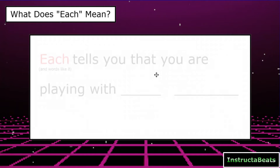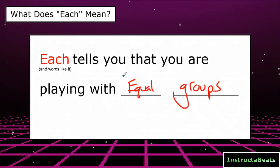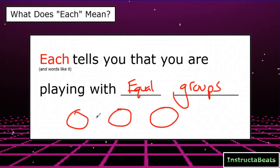If you try to do that, you're going to cause an error and we're going to have to reset the game and play again. So if 'each' doesn't mean those things, what does it mean? Because you see it a lot of times in multiplication and division word problems. Each simply tells you that you are playing this game with equal groups. So let's say you had three bags of apples and there were five apples in each of them — the parts are going to be five, they're going to be equal, and now you know you may be able to multiply or divide to help you solve the answer.